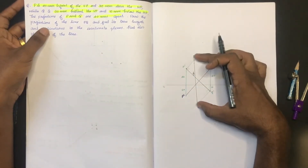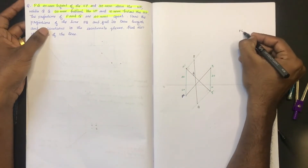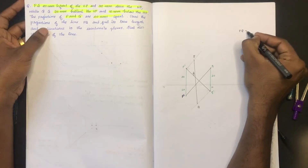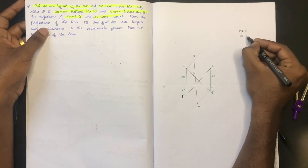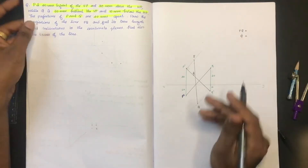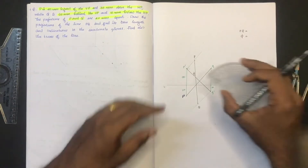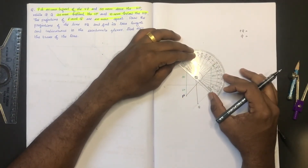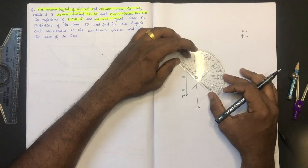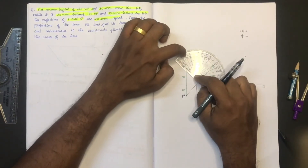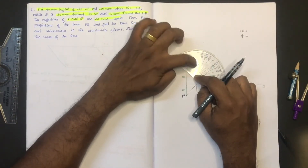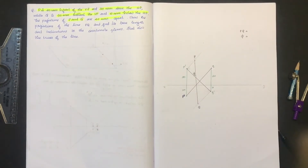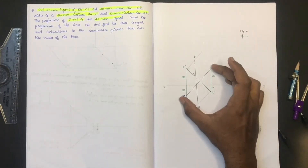Here is the trace — PQ will be the true length. We are going to measure: 0, 1, 2, 20, 30, 40. I will show you the answer.